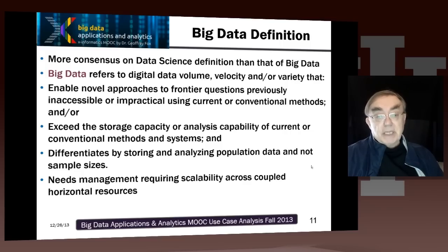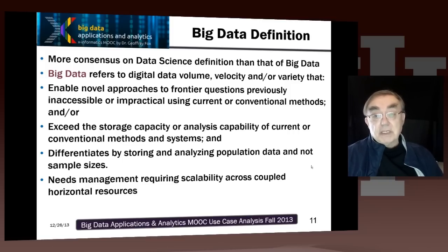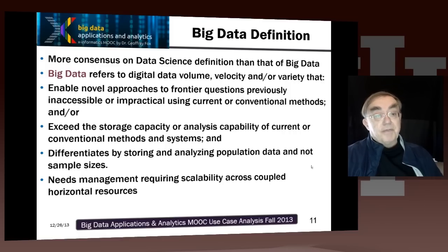Big data, as I said, is sometimes defined by the Vs, of which the most common Vs are three: volume, velocity, and variety. The bigness is the bigness of this. So you can actually have a small volume, but if you have high velocity and it gets updated very quickly, or very rich variety, then it could still be effectively big data, because the processing problem is big if you have a very complex data source.